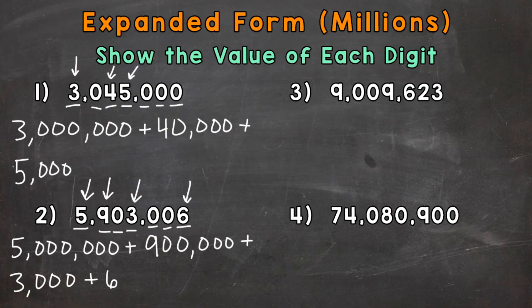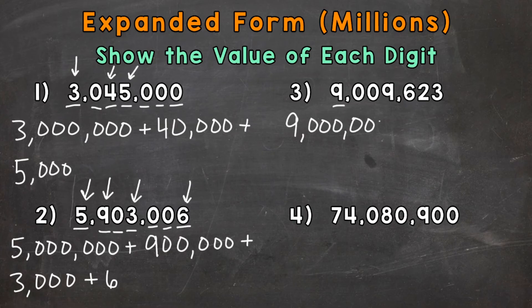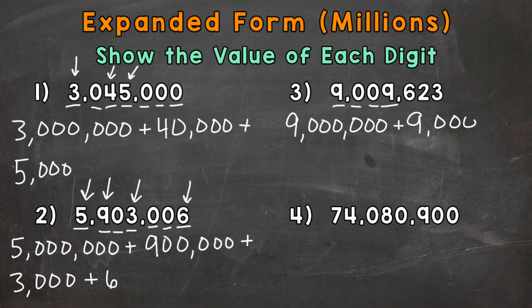On to number 3, where we have 9,009,623. We'll start with this 9, which has a value of 9 million because it's in the millions place. Then zero in the hundred thousands and zero in the ten thousands. Next, a 9 in the thousands, so that 9 has a value of 9,000. Plus a 6 in the hundreds, so that 6 has a value of 600.